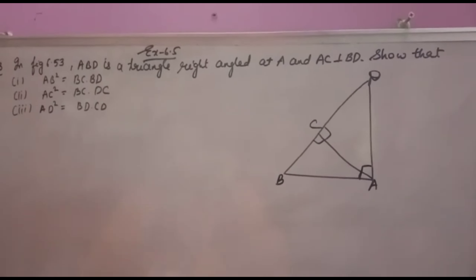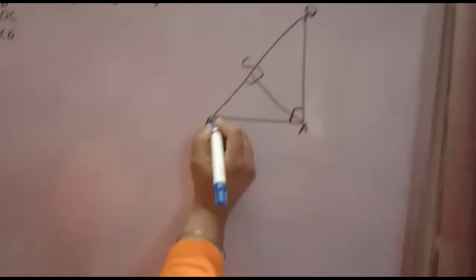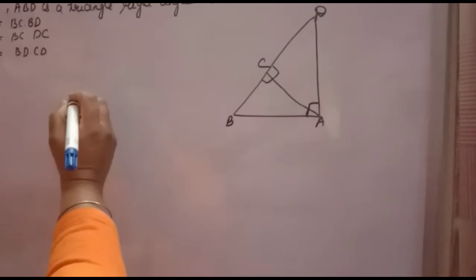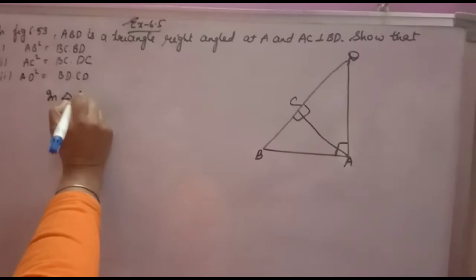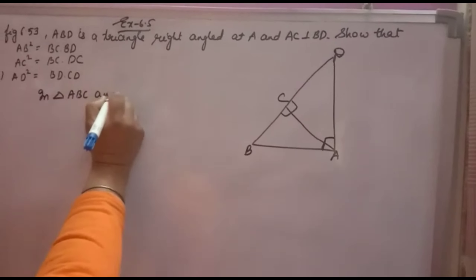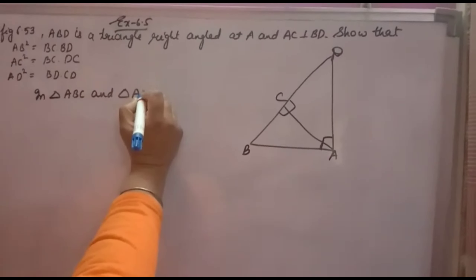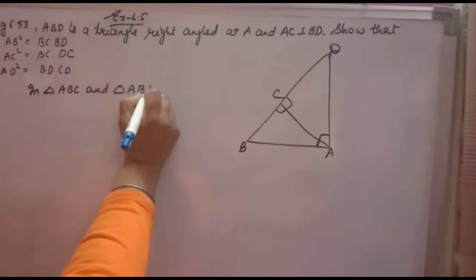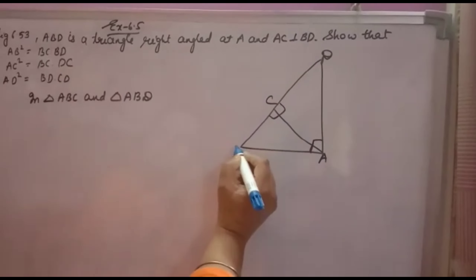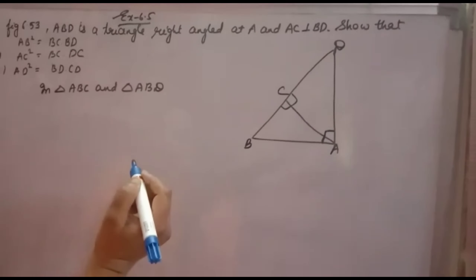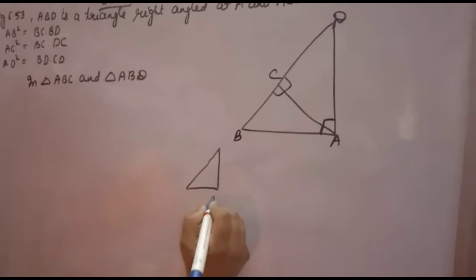What you will do — you will see that AB is coming in which triangle. AB is coming in triangle ABD and ABC. So you will firstly take triangle ABC and triangle ABD, because you want AB square — two times you want AB — so you have to take the triangles in which AB is coming. AB is coming in triangle ABD and in triangle ABC. So you will take these two triangles and draw them separately as right angle triangles.